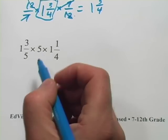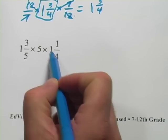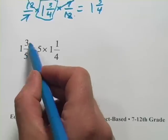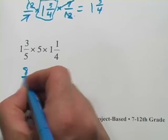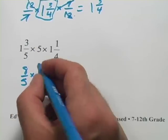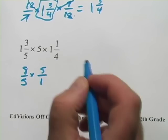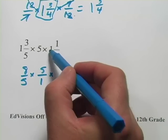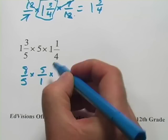Let's try this next one. We've got some mixed numbers. Let's convert them to improper fractions. So 1 times 5 is 5 plus 3 is 8 fifths. And then I'm going to write this 5 as 5 over 1, just so we have everything in the same format. I think it's less confusing. And then here, 1 times 4 is 4 plus 1 is 5 fourths.